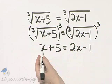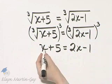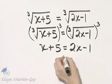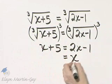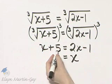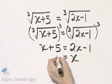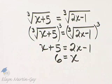And now this is a linear equation, so let's solve that by moving variable terms to one side, constants to the other. I will subtract x from both sides, so 2x minus x is 1x, or simply x, and then 5 plus 1 is 6. 6 is my proposed solution.